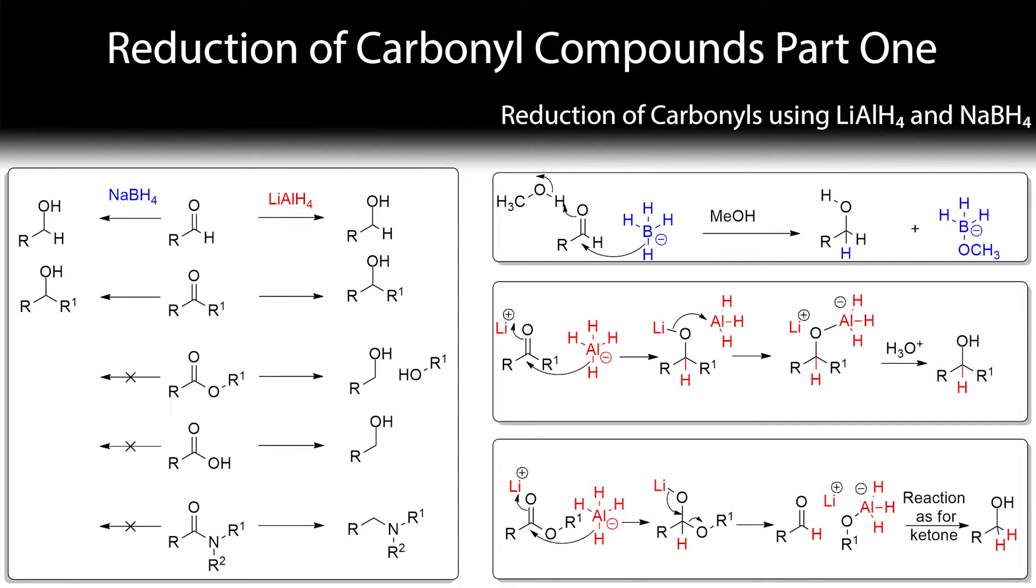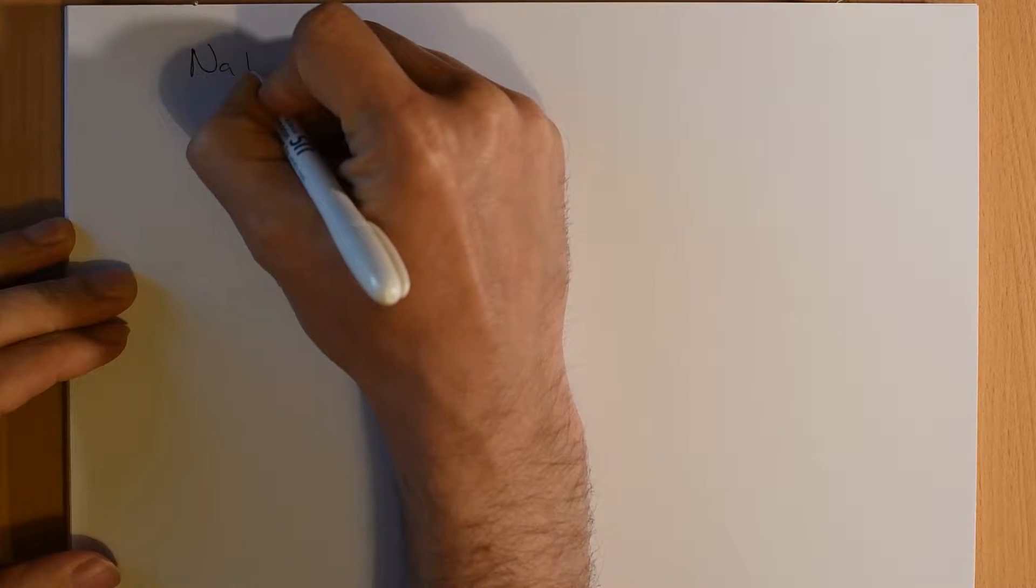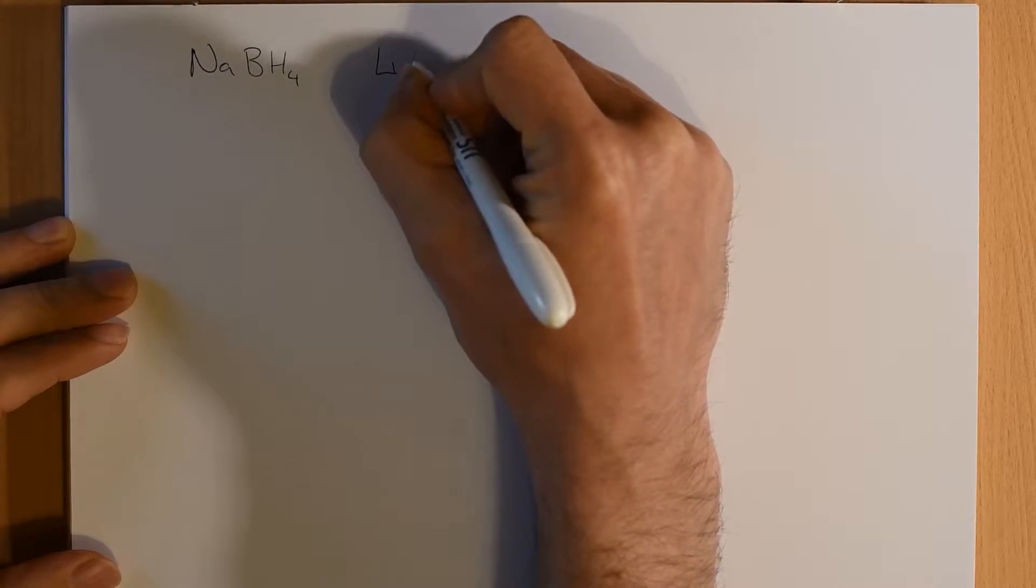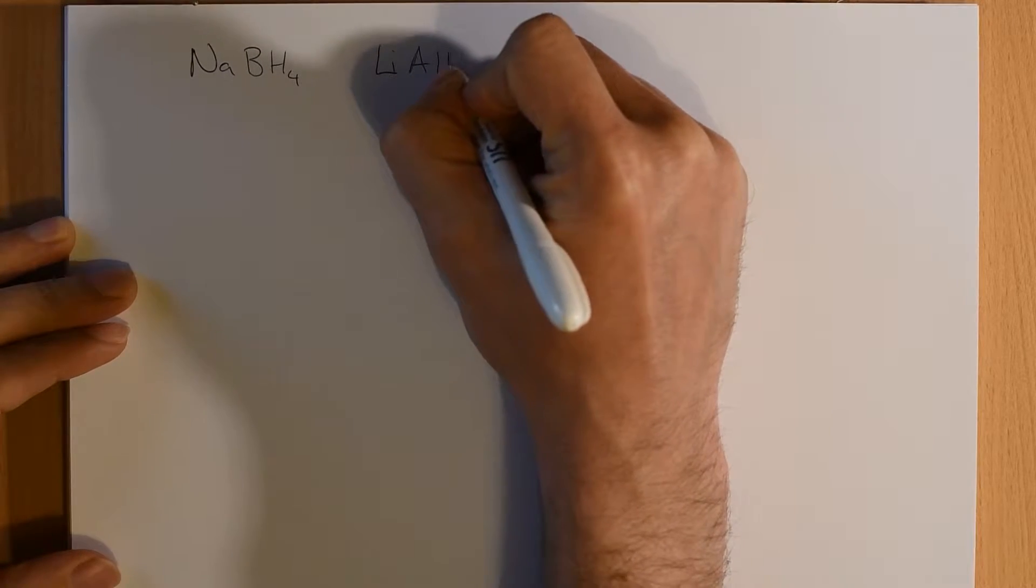Okay, we're going to have a quick look at two reducing reagents, sodium borohydride and lithium aluminum hydride. So NaBH4 and lithium aluminum hydride, LiAlH4.